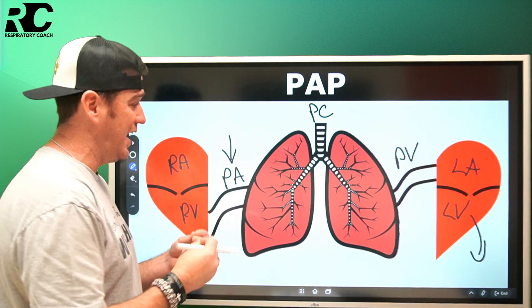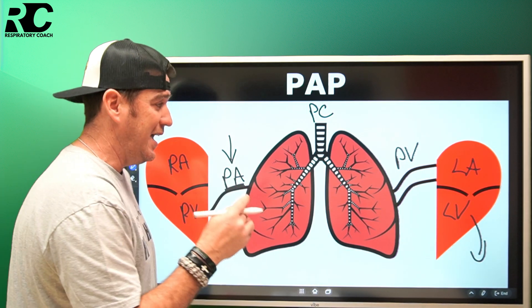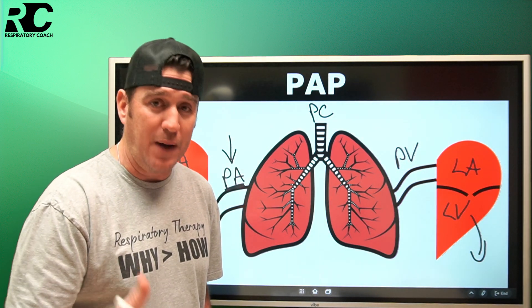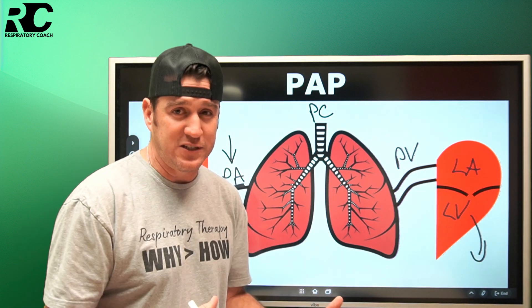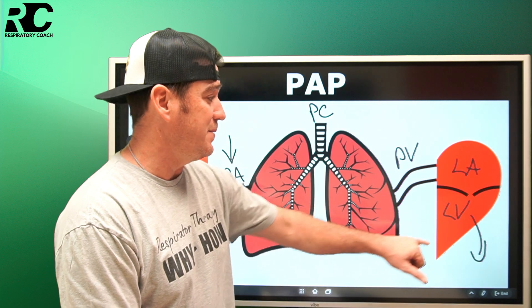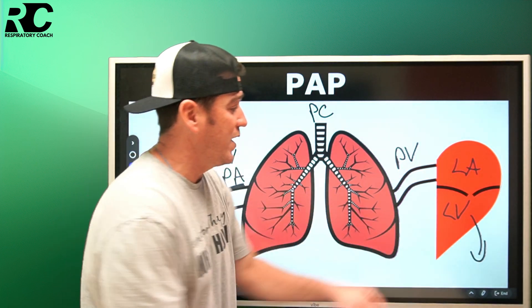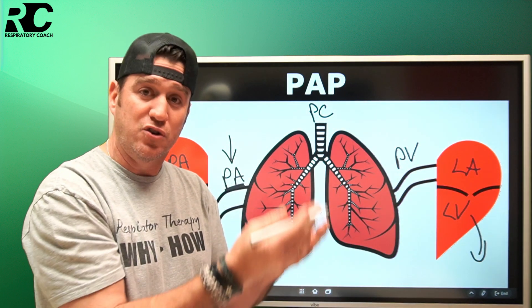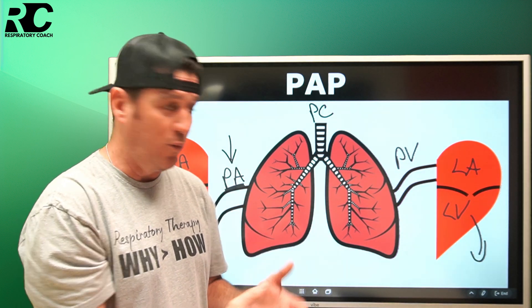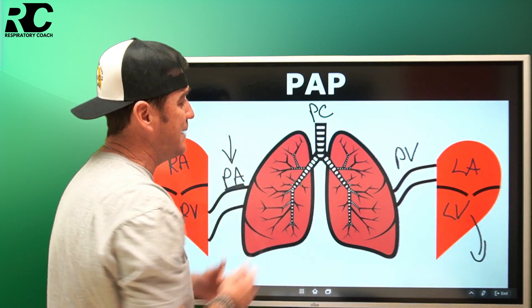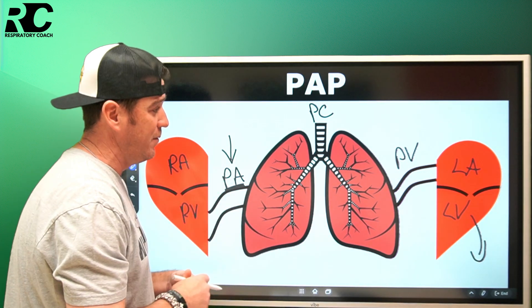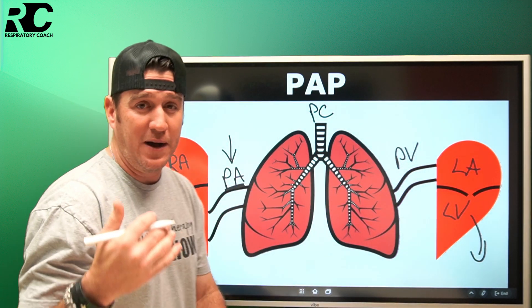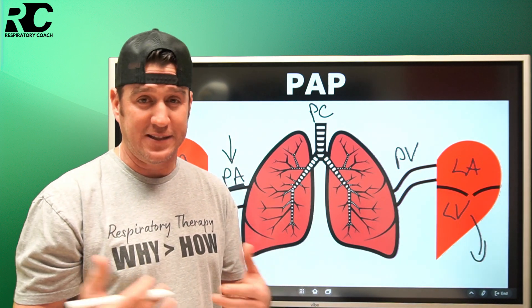When talking about pulmonary artery pressure, just like anything with hemodynamics, you have to identify where the problem is. In a previous video on pulmonary capillary wedge pressure, we discussed how left ventricular failure causes blood to back up into the left atrium, increasing left atrial pressure, which yields a high pulmonary capillary wedge pressure and also a high pulmonary artery pressure — because everything is backing up prior to it.